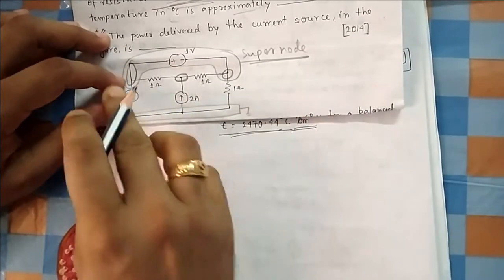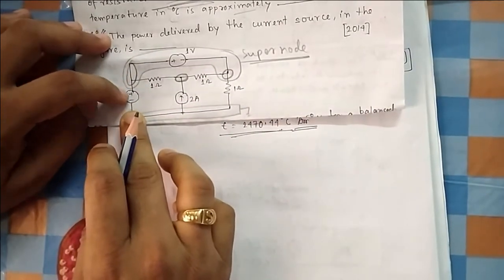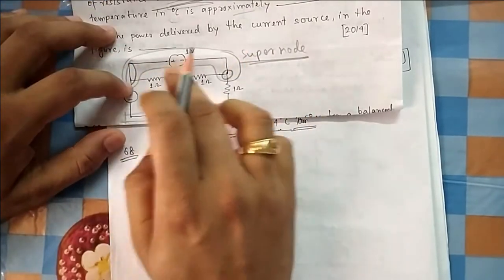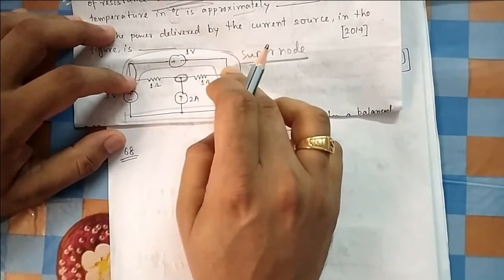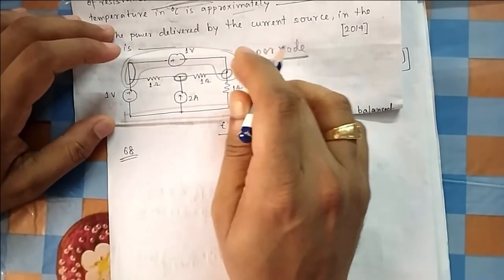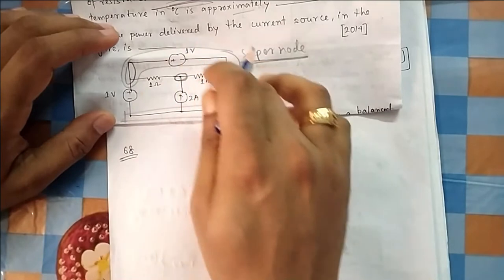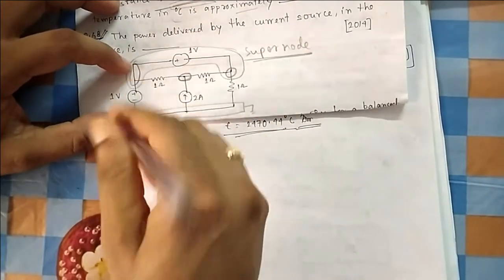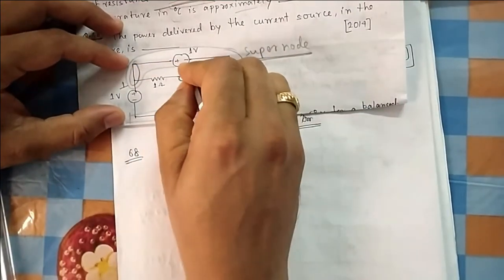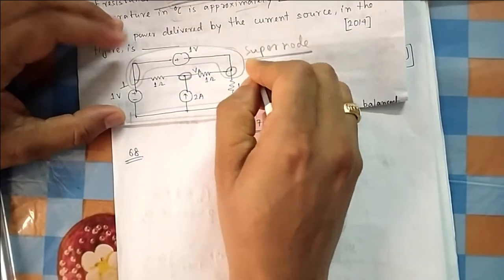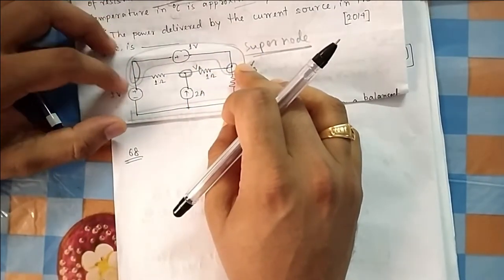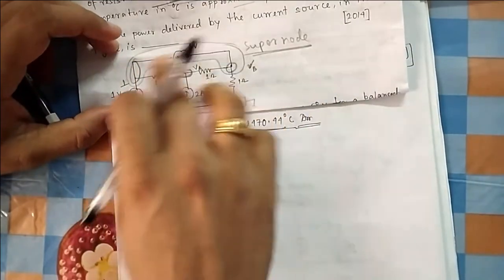If a voltage source is connected between two nodes and one is directly at ground, then that node voltage is fixed. But here the voltage source is not connected directly to ground — it is connected between node 1 and node 2, with node 3 grounded. So it becomes a supernode, and we don't write separate equations for each; we write one common equation.